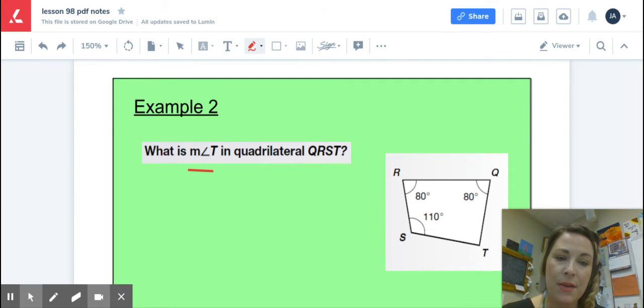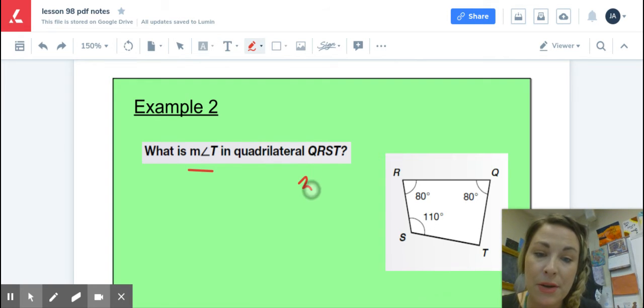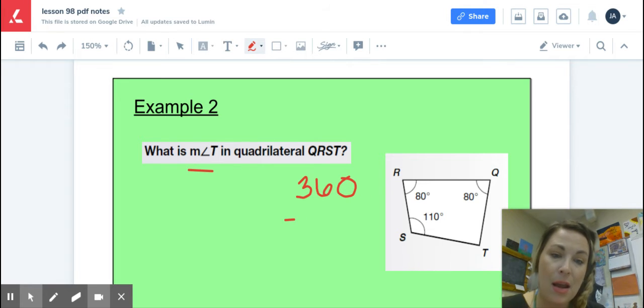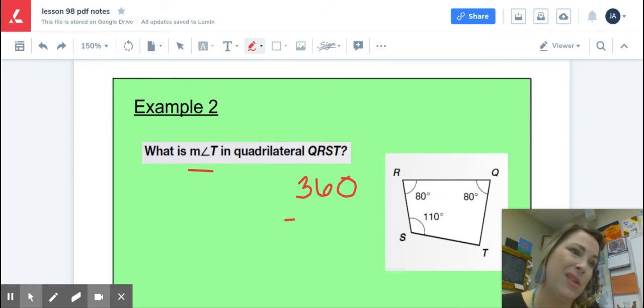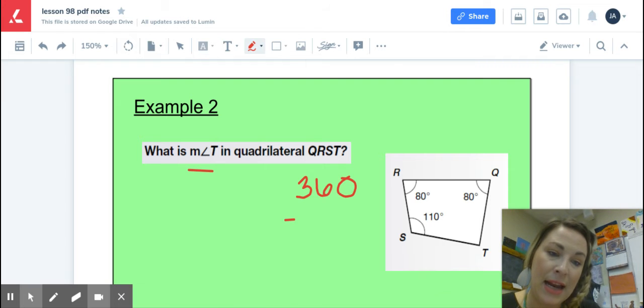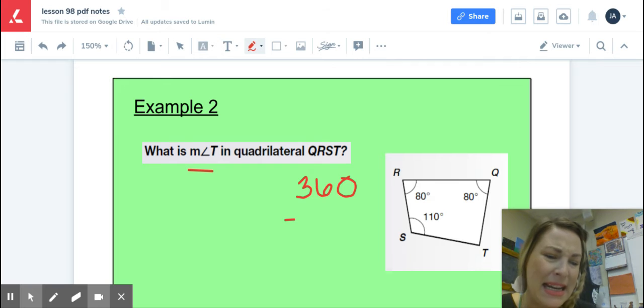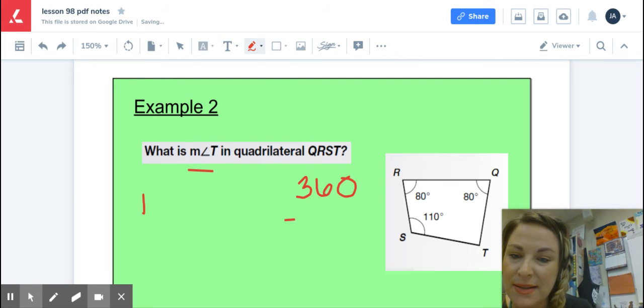So as I'm solving, the first thing that I'm going to consider is that I know the sum of the measures of the interior angles needs to equal 360 degrees. So that needs to be my grand total. Now I have to figure out what I do know to find out what I don't know. So I know I have 80, 80, and 110. So 80 and 80 would be 160.